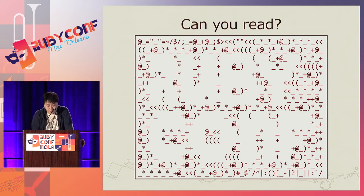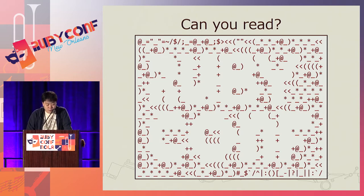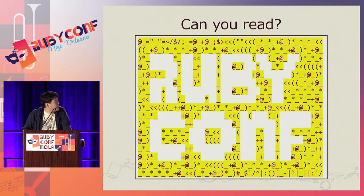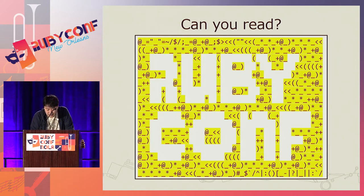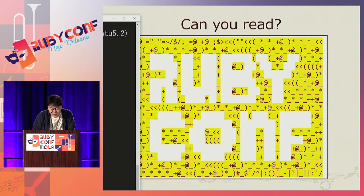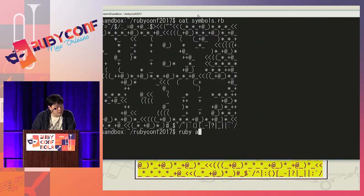This is a complete Ruby code that contains only symbol characters. Can you read this? This is slightly hard to read because it is not syntax highlighted. So I highlight the characters, except spaces. Let's run it. Ruby code. This is the code, and it writes... Hello, Ruby code. Yeah.